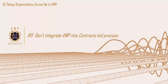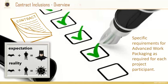Number nine: don't integrate IWP into contracts and the bid process. You might think that's a fairly obvious one, but it's a pretty regular occurring issue when we audit projects. People get into the mindset of 'the suppliers know what they need to give us, we've worked with them before.' Unfortunately, contracting requirements, templates, and expectations of your IWP guidelines are paramount. It's amazing how many contracts are devoid of IWP and work face planning requirements.